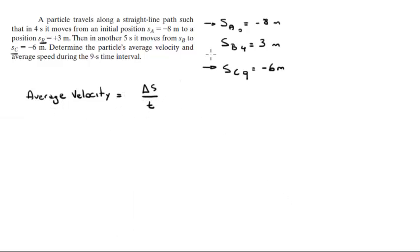This is simply given by the final minus the initial. The final position is negative 6 minus the initial position negative 8, over the amount of time that passed by. So from 0 to 9 it was 9 seconds, so this comes out to be 2 over 9 which is equal to 0.222, and this is in meters per second.